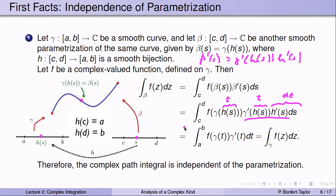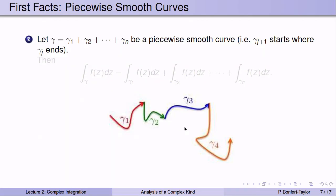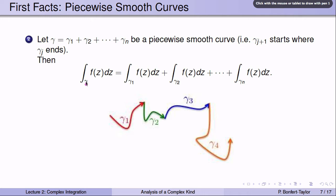Therefore, the complex path integral is independent of the chosen parametrization. For a piecewise smooth curve — one that is made of finitely many smooth pieces where each piece starts where the previous one ends — the integral over gamma of f(z) dz equals the sum of the integrals over gamma₁, gamma₂, gamma₃, up to gamma_n.